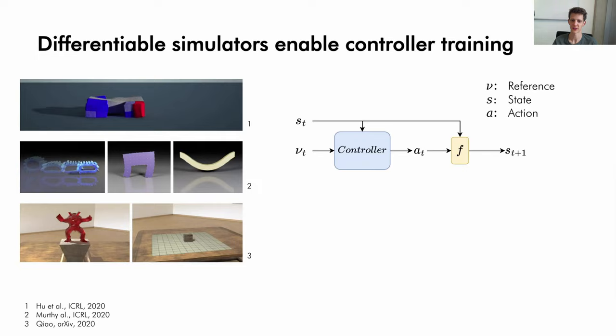Differentiable simulators allow us to calculate gradients through a simulation. These simulators have been demonstrated to allow training of policies that control complex structures with large degrees of freedom. In the case of trajectory tracking, we can use such simulators to train a control policy. By comparing the resulting state with the reference we aim to achieve, we can calculate a loss. The loss can then be backpropagated directly through the simulator and update the control policy.